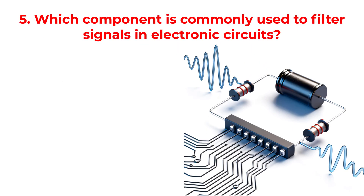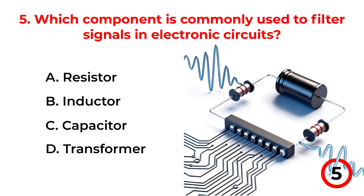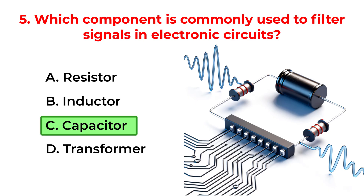Which component is commonly used to filter signals in electronic circuits? A. Resistor. B. Inductor. C. Capacitor. D. Transformer. Correct answer is option C. Capacitor.